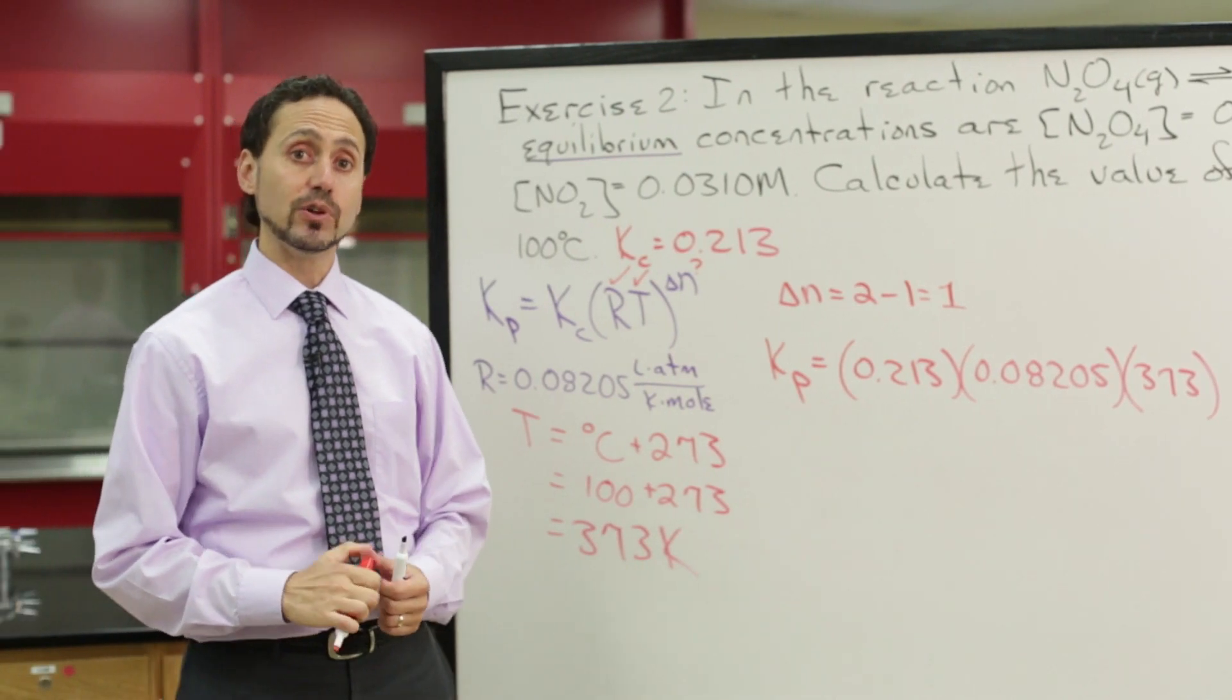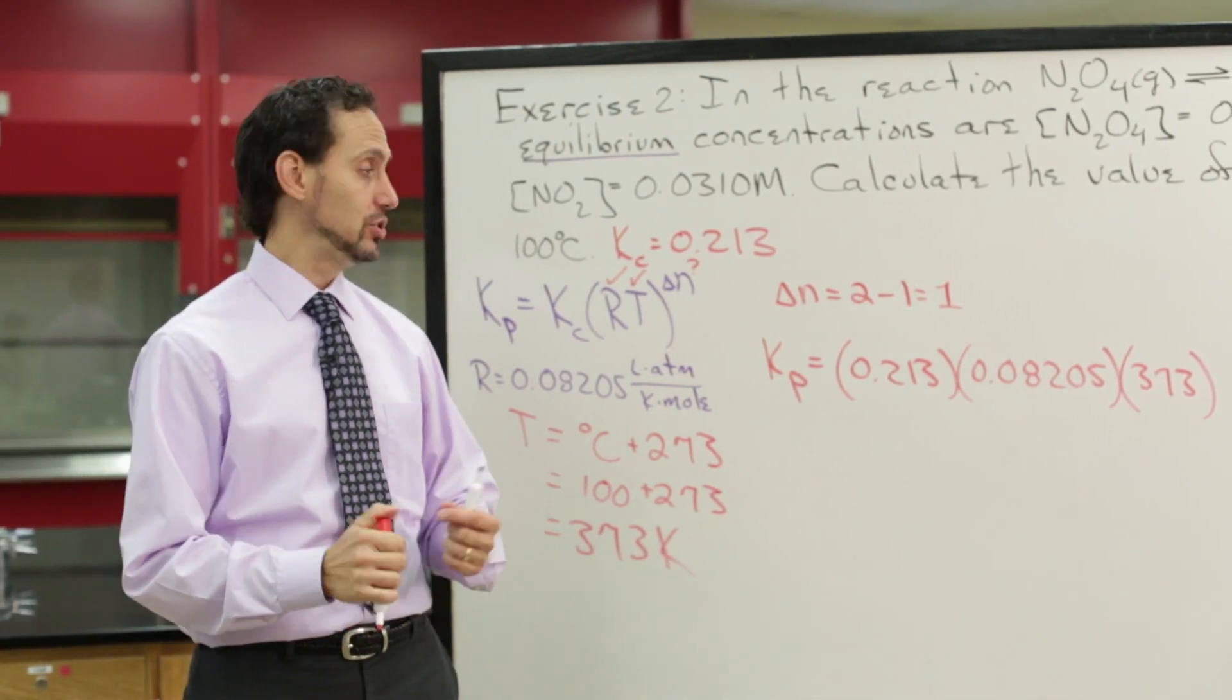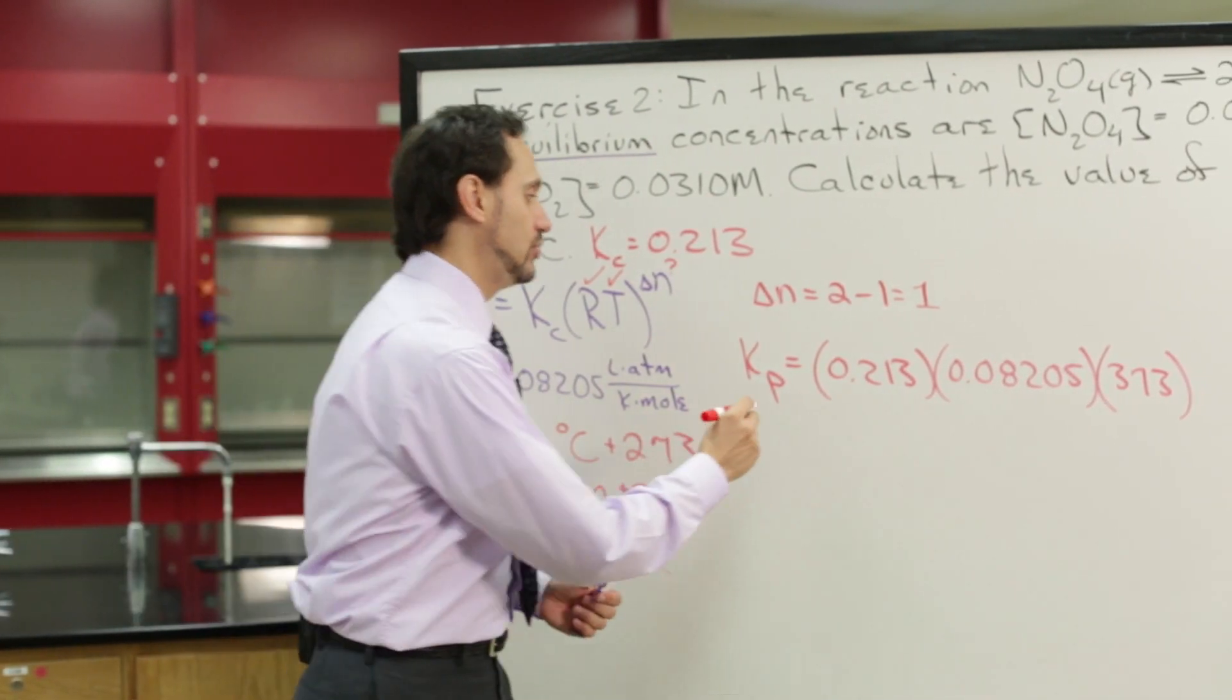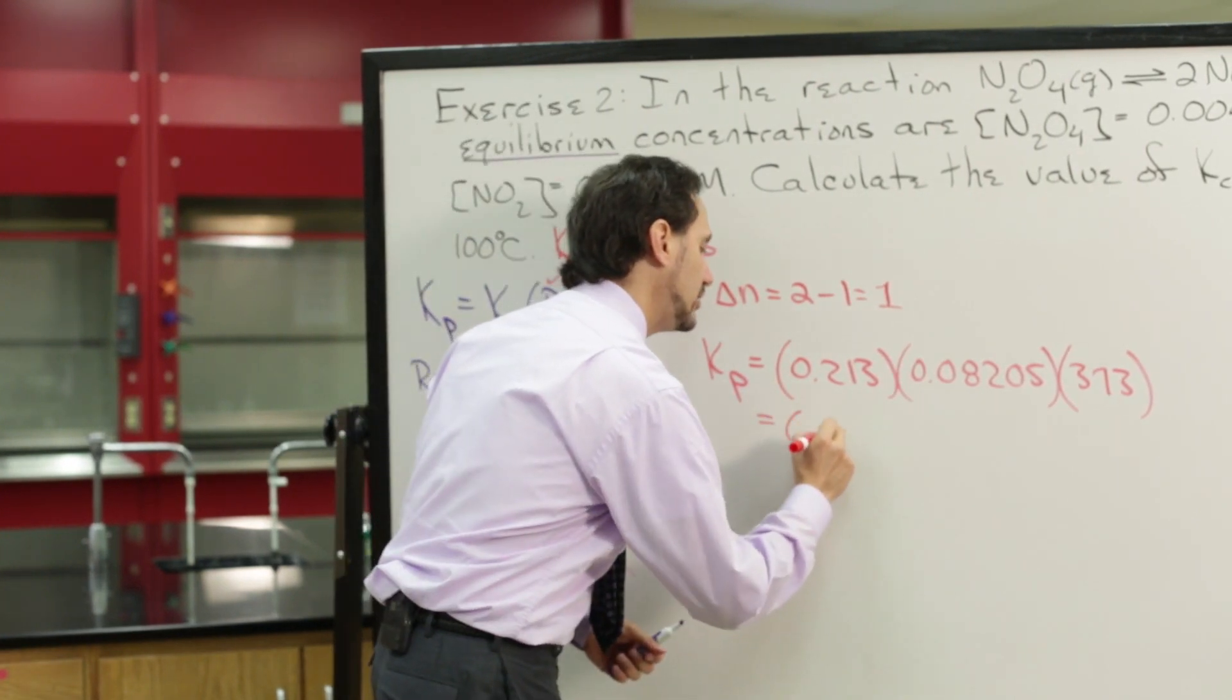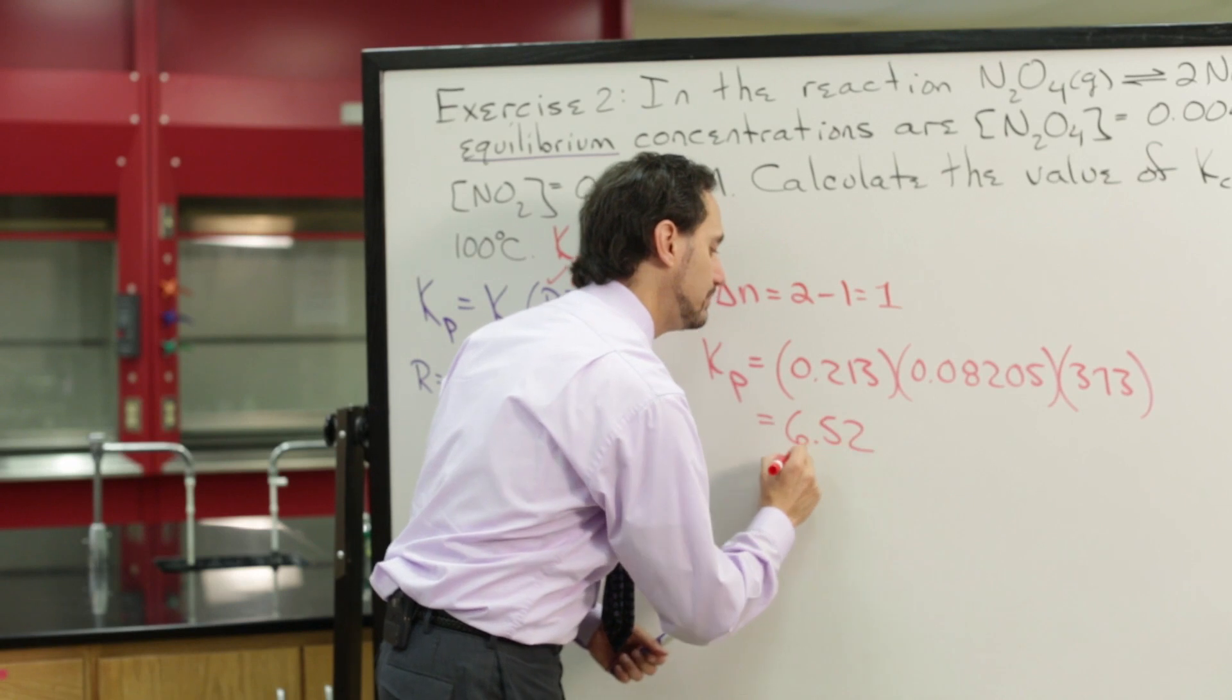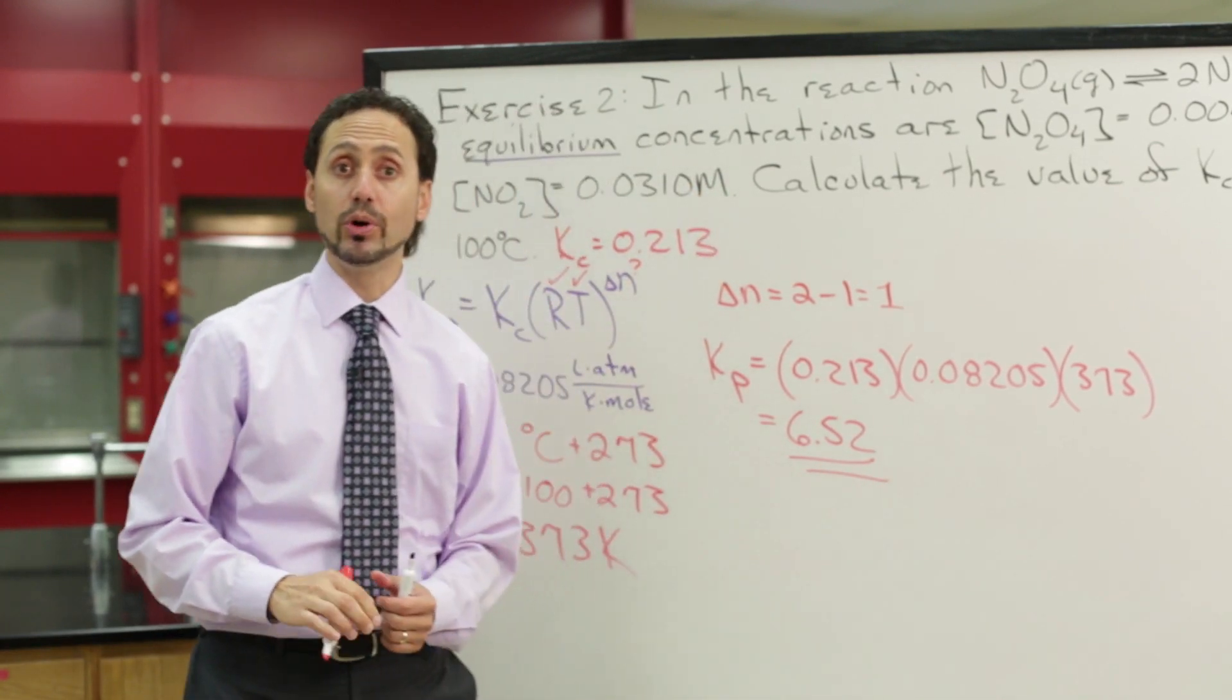And since those are raised to the first power, we don't have to do anything there. So we simply run those numbers through our calculator. And it tells us that the value of K sub P is 6.52.